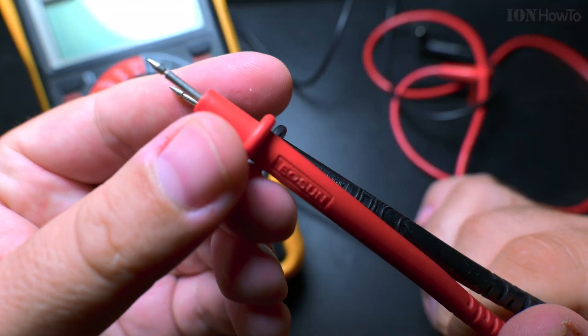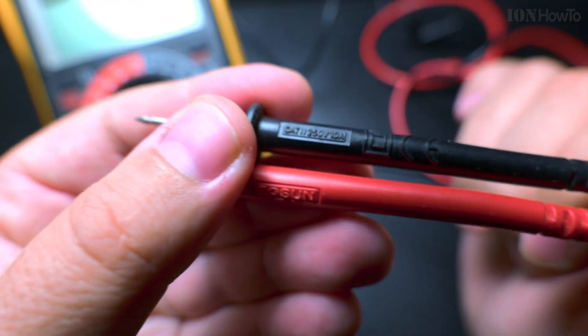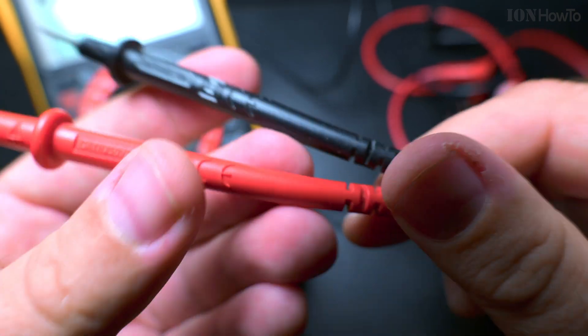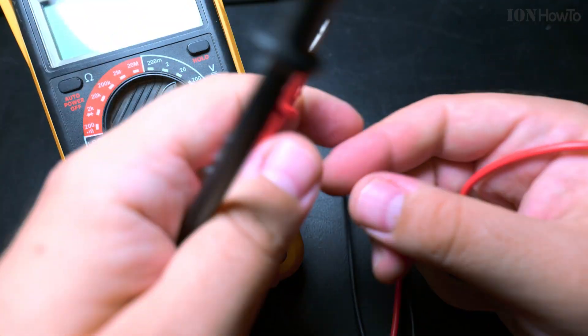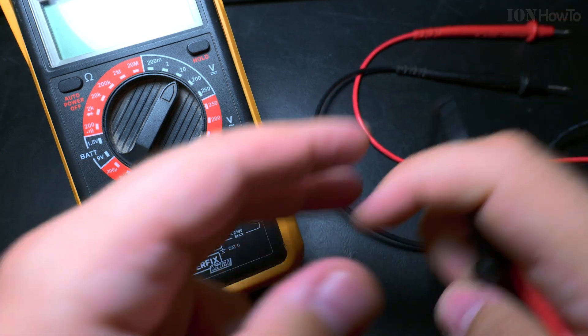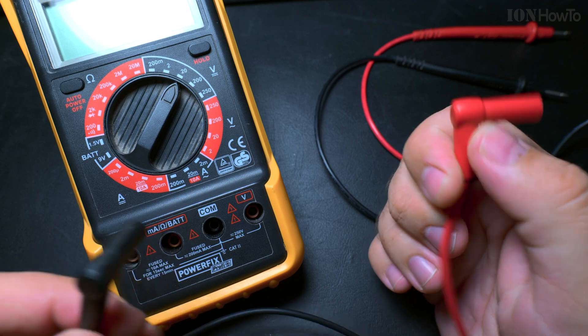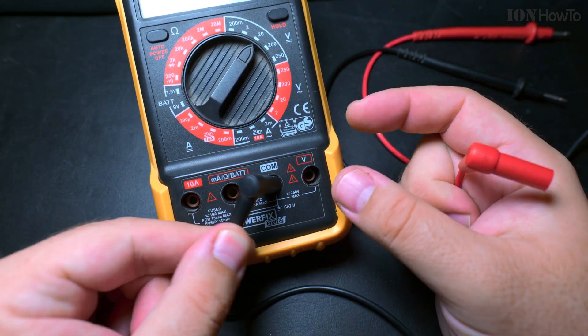Next thing when you start using the multimeter is to use the probes. These probes are 250 volts, 10 amps rated. It's important to use the correct probes for what you do. Most of the time you would check contact. I rarely check the AC current, actually only once or twice maybe. Black always goes to COM.